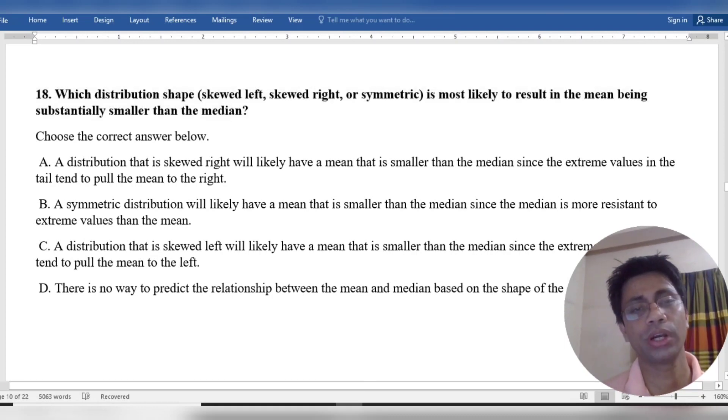skewed left, skewed right, or symmetric, is most likely to result in the mean being substantially smaller than the median. Choose the correct answer below.